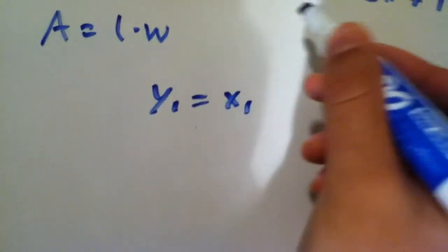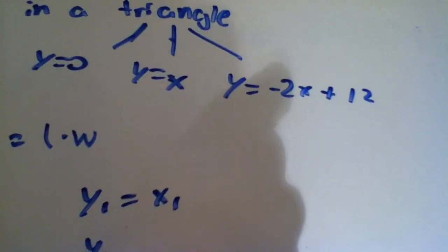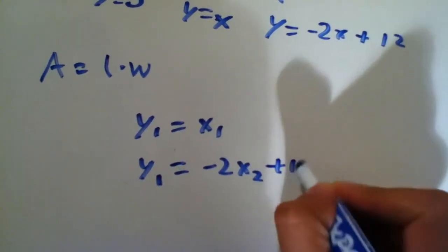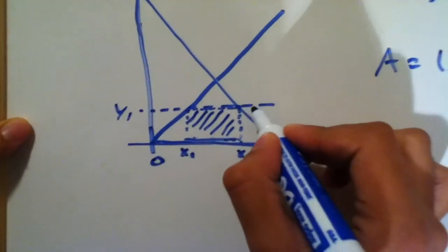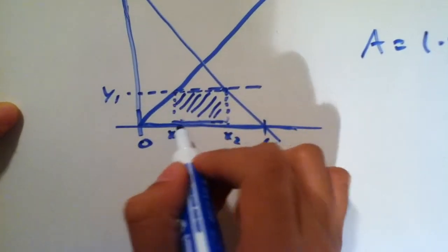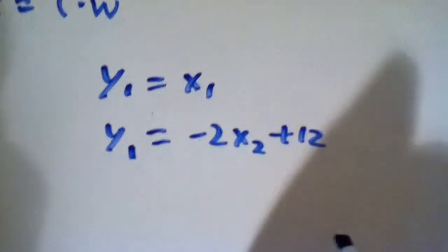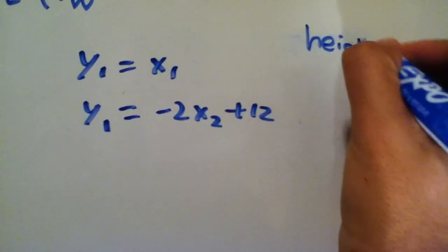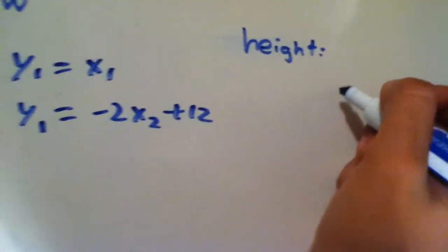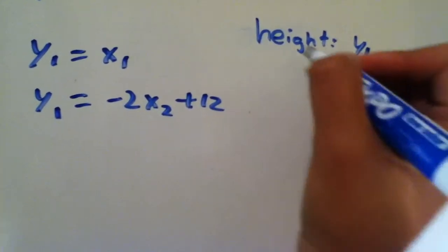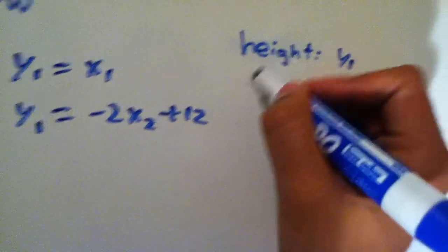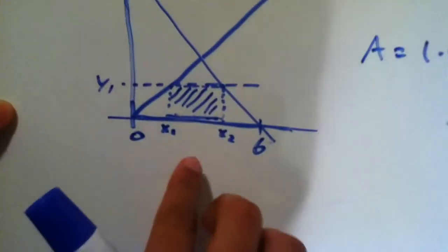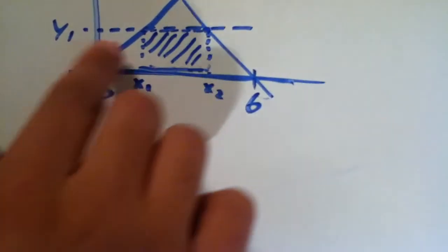So let's just start writing some equations for this. So y1 equals x1. Again, we're taking these equations here from the top and just writing them here. And y1 equals negative 2x2 plus 12. So I'm just labeling this here as x2 and this here as x1. And both of these equations will have the same y. So now we know the length, or rather the height, of this rectangle is y1. And the length of this along the x-axis is x2 minus x1. And we see that just by looking here. So x2 minus x1 times y1. And that will be the area.